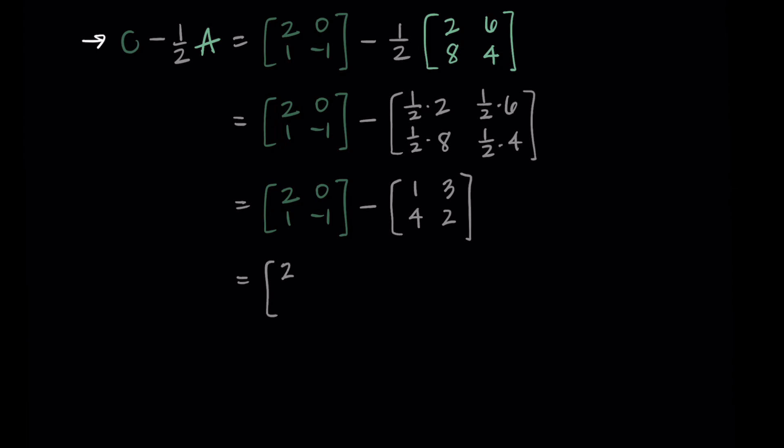Now we just need to subtract the corresponding elements. So I do 2 minus 1, 0 minus 3, 1 minus 4, and -1 minus 2. Then simplifying, I'm getting the new matrix [1, -3, -3, -3], and there we go, that's our matrix C minus one half A.